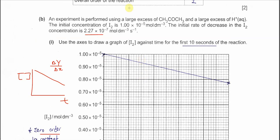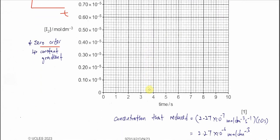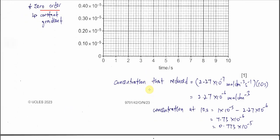The initial concentration is 1 × 10⁻⁵, so the first point is plotted there. We just need to find the last point to draw the straight line. To do this, calculate the concentration reduced after 10 seconds: rate × time = 2.27 × 10⁻⁷ × 10 = 2.27 × 10⁻⁶ mol dm⁻³.